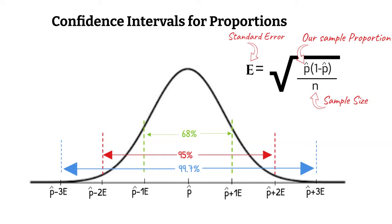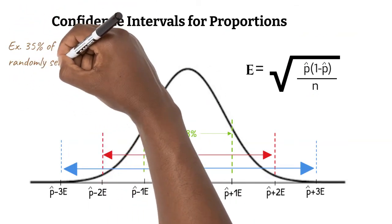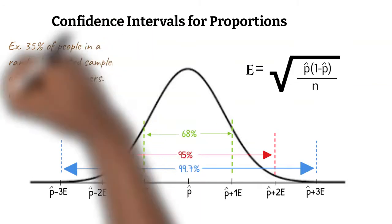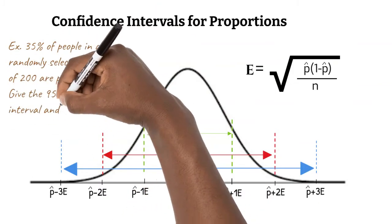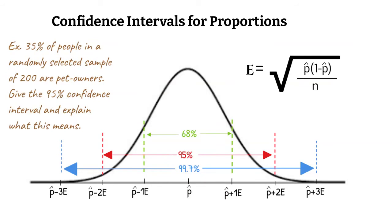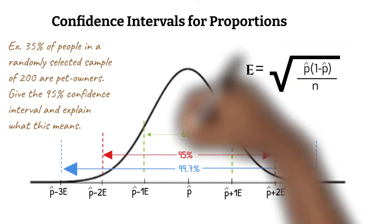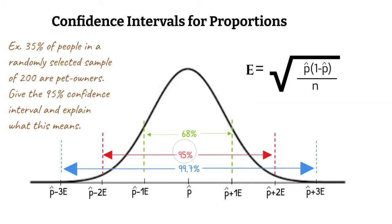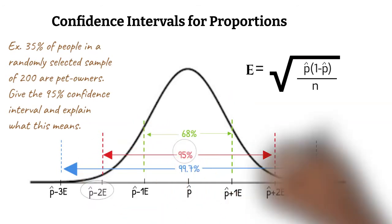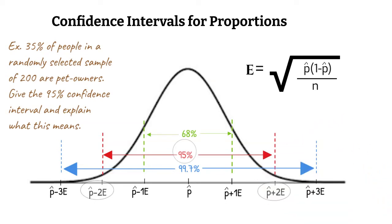Let's take a look at what this could look like in an actual example. 35% of people in a randomly selected sample of 200 are pet owners. Give the 95% confidence interval and explain what that means. We know from our normal model that 95% of proportions are between 2 standard errors below our sample proportion and 2 standard errors above our sample proportion. Our sample proportion is 35%, or 0.35.